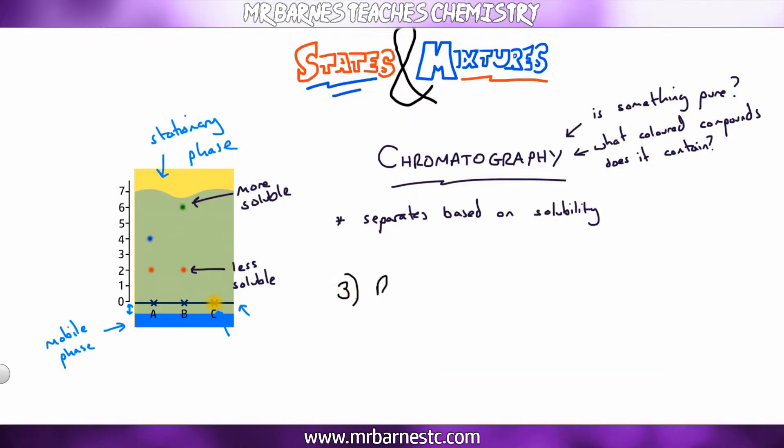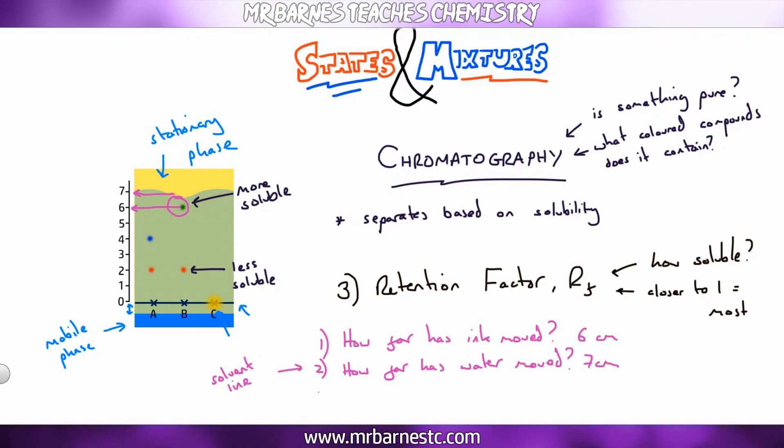You can work out the retention factor from a chromatogram. The retention factor tells you how soluble it is—the closer to one, the more soluble. First, work out how far the ink has moved: six centimeters. Then how far has the water line moved: approximately seven centimeters. Divide the ink distance by the water distance: 6 divided by 7 equals 0.86, which is very soluble. Always remember your retention factor is between zero and one. If you get anything above one, you've done it wrong—swap the numbers around.